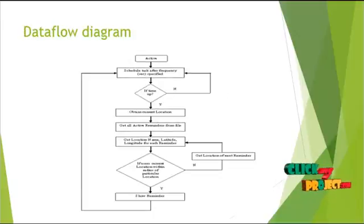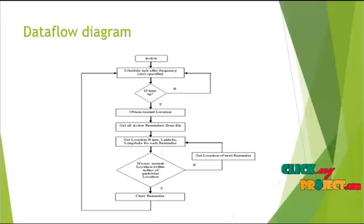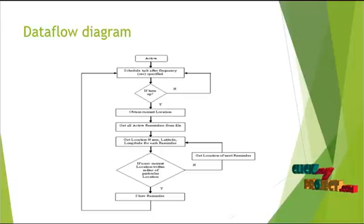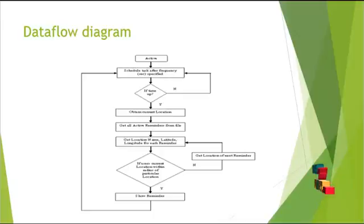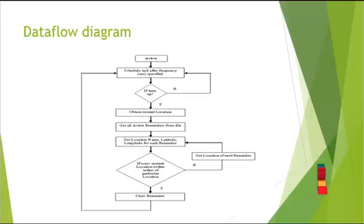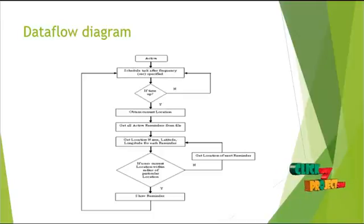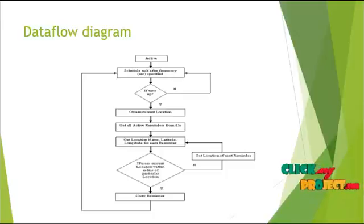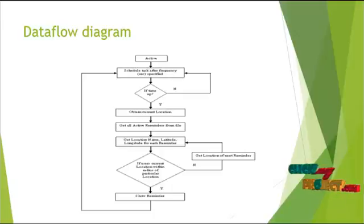The action is scheduled by a task with a specified frequency. When the time is reached and the current location is updated, all active reminders are retrieved from the file. If the stored location equals the current location, the corresponding location reminder will be fetched and shown. Each time the location is updated, the values are also updated, and the task is scheduled again for the specified frequency with time checked.